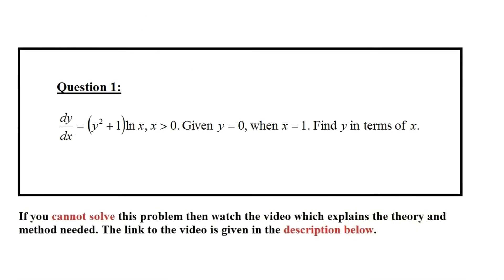Hi there. In this video I'm going to do a revision question on differential equations. So let's take a look at the question. Question number 1: dy over dx is equal to y squared plus 1, multiplied by ln x, where x is bigger than 0. Given y is equal to 0 when x equals 1, find y in terms of x. So let's think about how we're going to do this question.